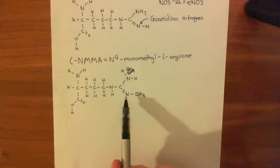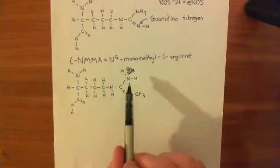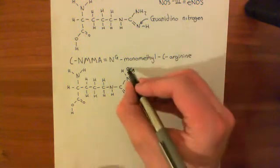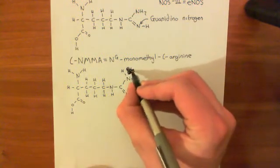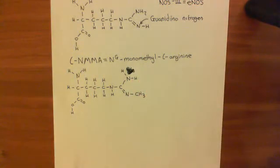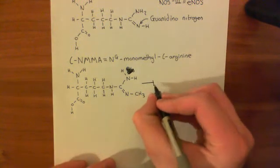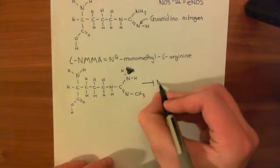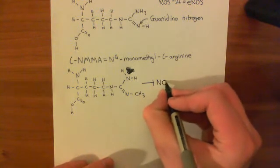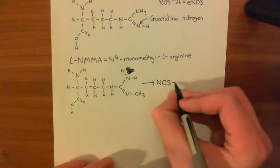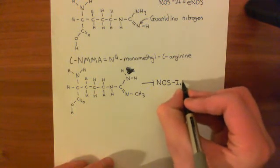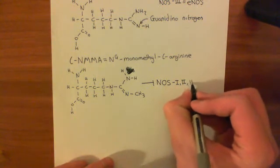It basically just has a methyl group off the guanidino nitrogen rather than a hydrogen. You can see this is an almost identical structure to L-arginine, but it will not undergo the same reaction. It goes into the active site of the NOS enzymes and blocks L-arginine from getting in, so it inhibits NOS1, NOS2, and NOS3 and is not particularly selective for any of them.